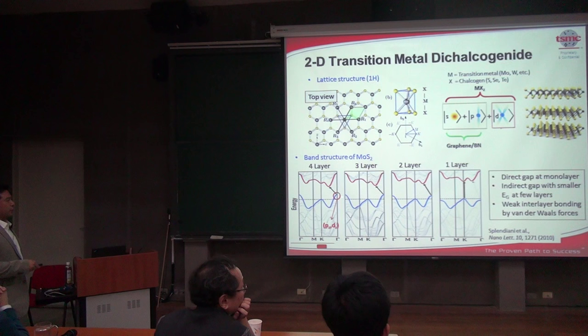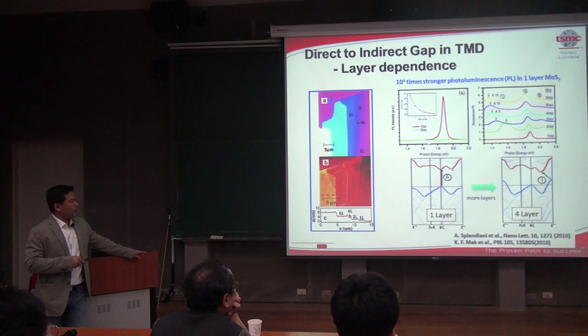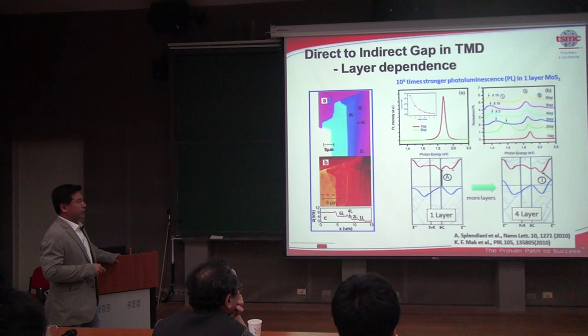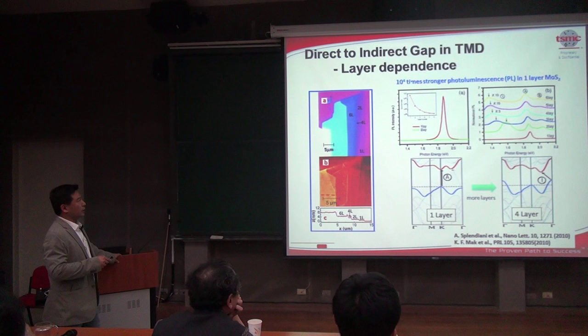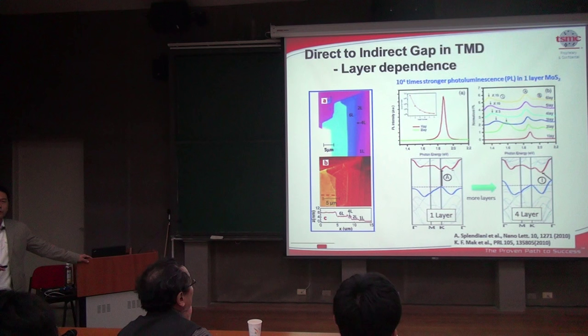This direct-to-indirect band gap transition reflects very strongly in photoluminescence behavior. A group at Columbia showed that in a single-layer TMD material, MoS2, you get very strong photoluminescence because of direct band-to-band transition. This direct transition is prohibited when you go to two layers — the intensity at the same energy is 10,000 times lower. This was demonstrated on a suspended sample. In terms of electronics, this direct-to-indirect band gap transition also has consequences for tunnel FET behavior, as we will explain later.